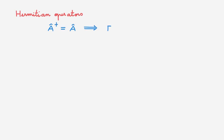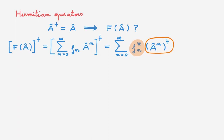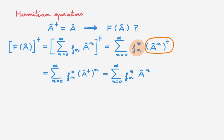Next, let's consider Hermitian operators. If A is a Hermitian operator, can we say anything about a function of A? To figure this out, let's consider the adjoint of f(A). Writing the power series, we get the adjoint of a sum, which equals the sum of the adjoints. Using the fact that the adjoint of a scalar is its complex conjugate, and that the adjoint of a product reverses the order, since we only have operator A in the power, we simplify. If A is Hermitian we can replace A† with A. We see that the expansion coefficients appear as complex conjugates of the original ones, so in the most general case the function of a Hermitian operator is not Hermitian.